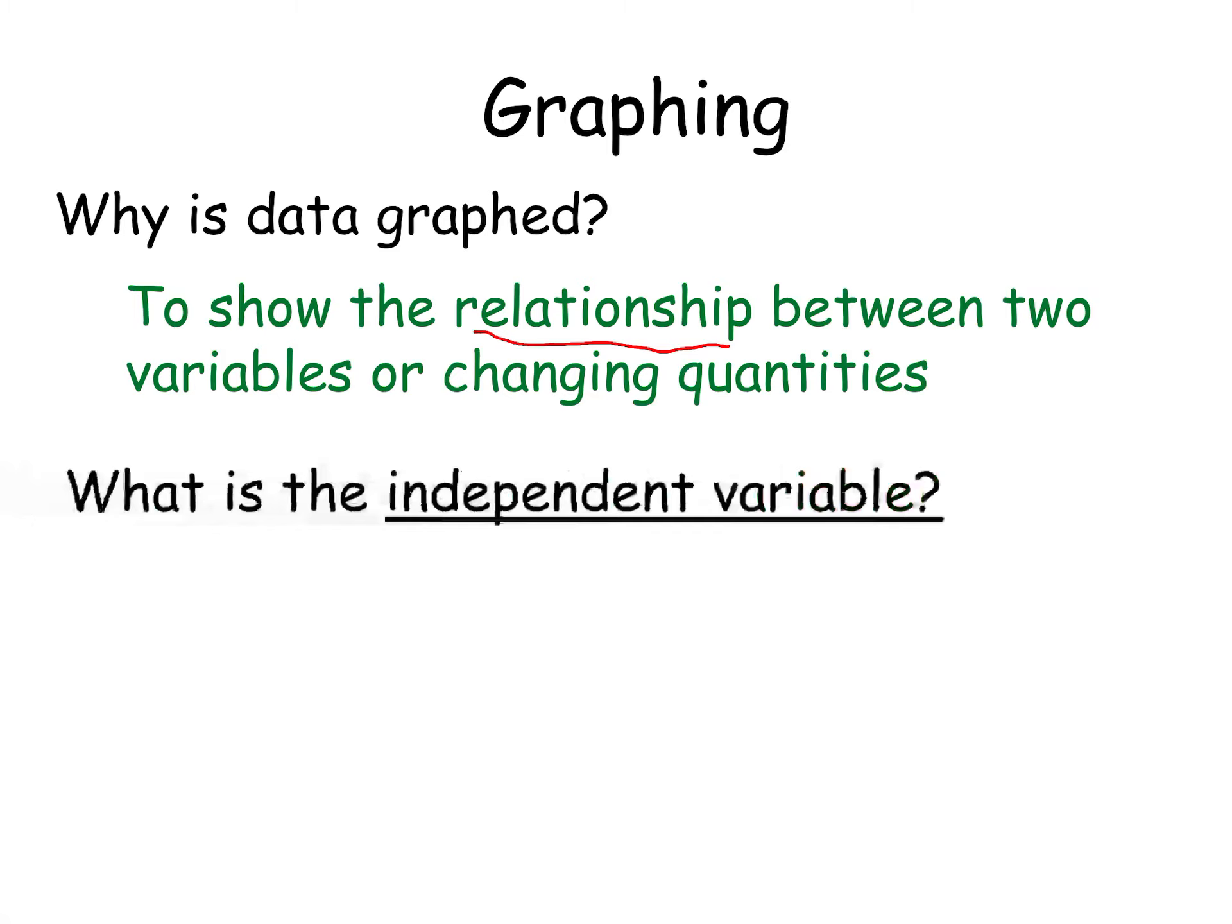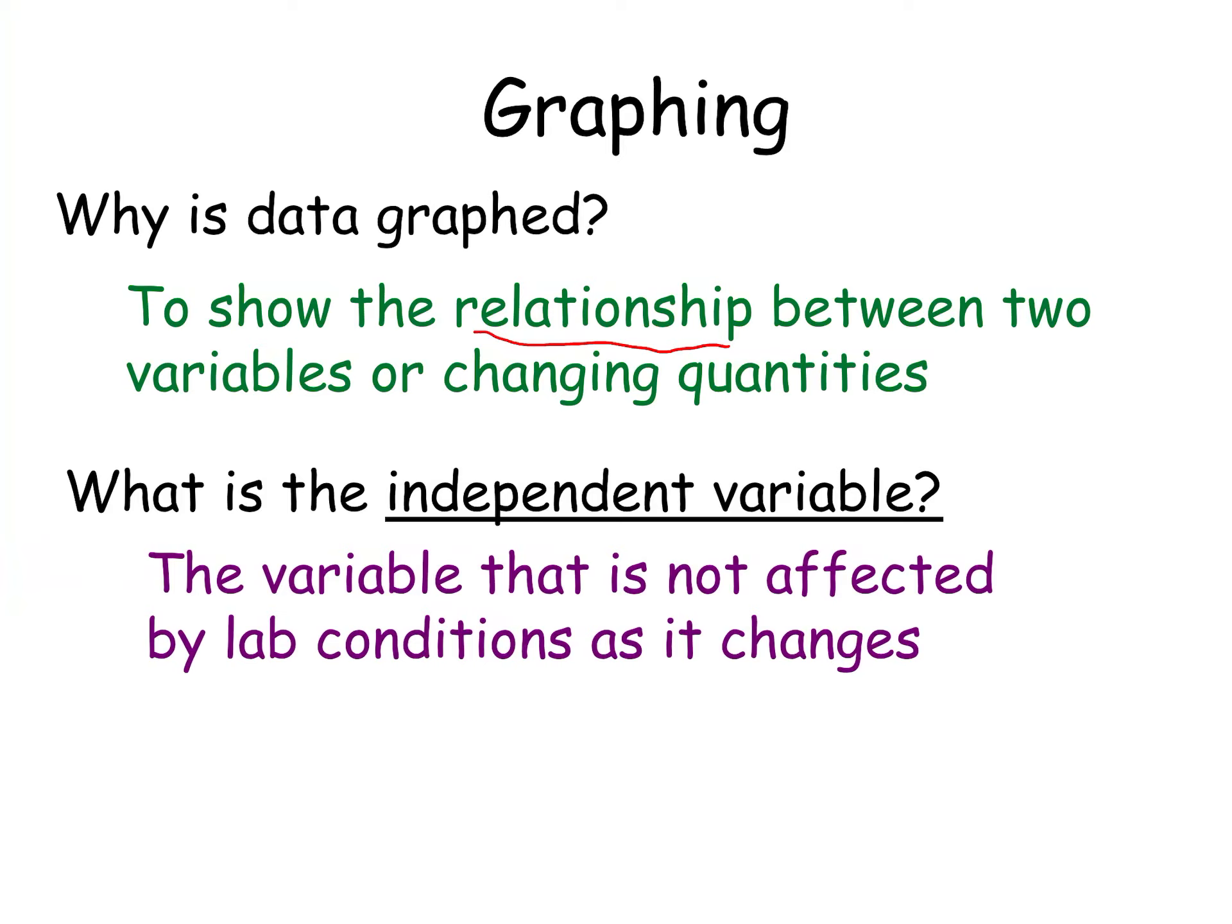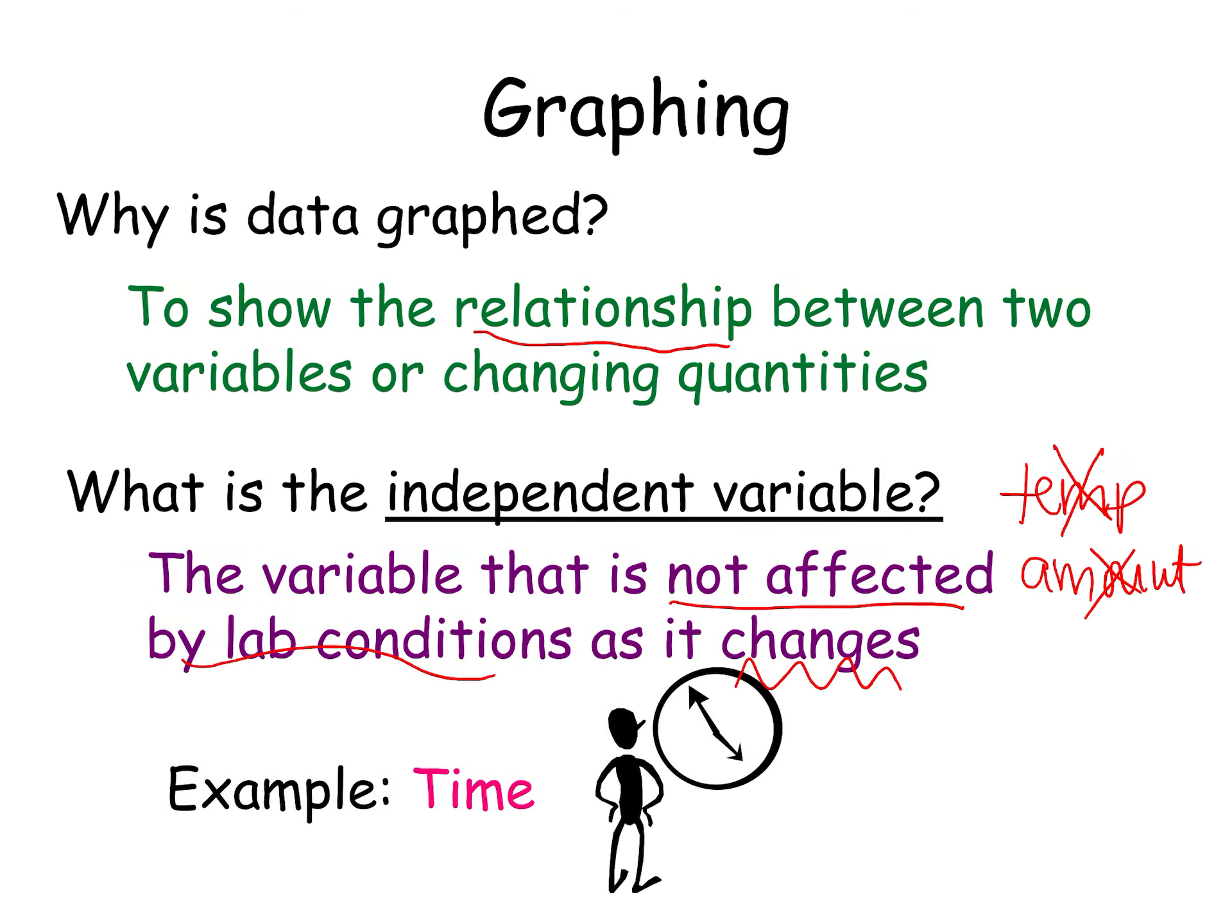We have both independent and dependent variables. Independent is what is not affected by lab conditions as it changes. It is changing, but it's not affected by things like temperature or amount. The classic independent variable is time. Time is going to increase, so usually that is what we call independent.